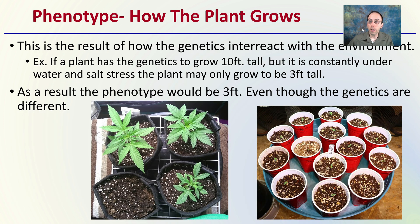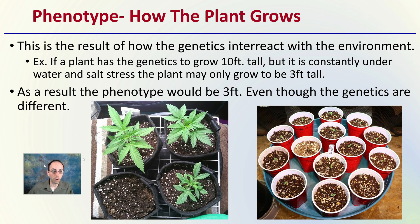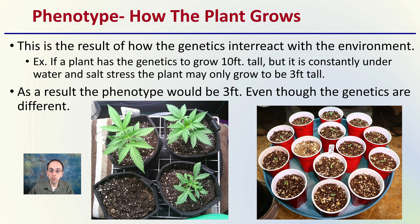First, we look at phenotype — this is how the plant grows, and it's a result of how the genetics interact with the environment. So if a plant has the genetics to grow 10 feet tall, but it's constantly under water or salt stress, the plant may only grow to be three feet tall. As a result, the phenotype would be three feet, even though the genetics could produce 10-foot plants.